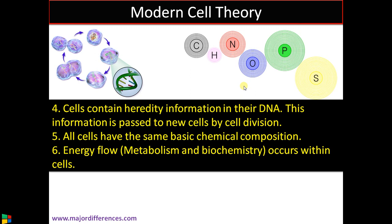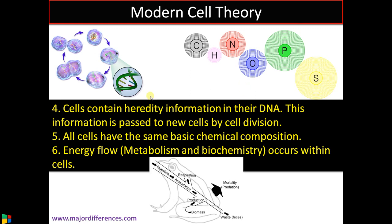The final point is energy flow, which occurs within cell metabolism. The sum total of chemical reactions happening inside the cell is called metabolism. Food is taken in and utilized by respiration, generating energy that drives cellular activities. Biomass is accumulated and the rest is excreted or removed from the system, and this happens inside a cell and as an organism also.